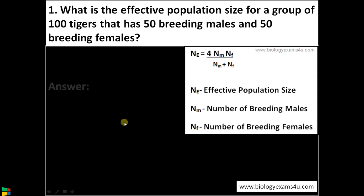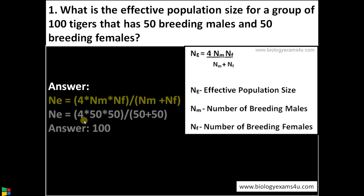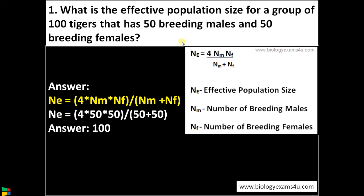Let us substitute the values. It will be 4 × 50 × 50 / (50 + 50), as the number of breeding males is 50 and the number of breeding females is also 50, and the answer will be 100. So here the total population size is equal to the effective population size in this example.